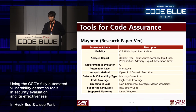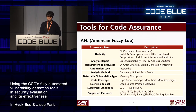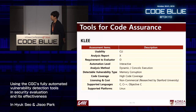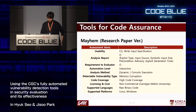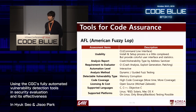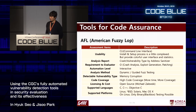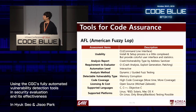CLI, Mayhem, SAGE, and AFL are binary-based automated code assurance tools, but their automation level is interactive. For example, AFL is today's famous fuzzer, but from an evaluator's perspective it is very hard to use, because when you apply this tool to binary or software, you need crash analysis and root cause analysis.